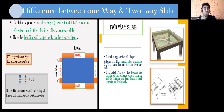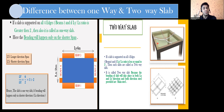A likely follow-up question: in a one-way slab, where do you provide the main reinforcement? The logic is: steel is always provided wherever bending occurs. In a one-way slab, bending happens in the shorter span, so main reinforcement is provided along the shorter span. In a two-way slab, bending happens in both directions, so main reinforcement is provided along both the shorter span and the longer span. In a one-way slab, steel is also placed along the longer span, but that is distribution steel — not main reinforcement.